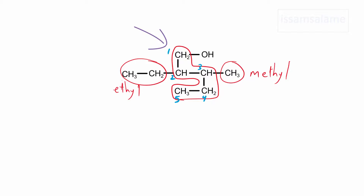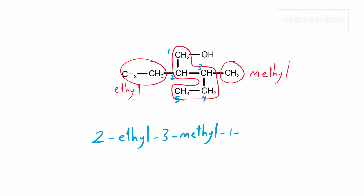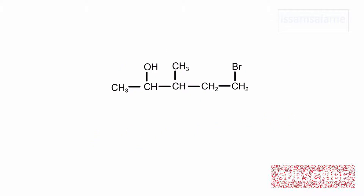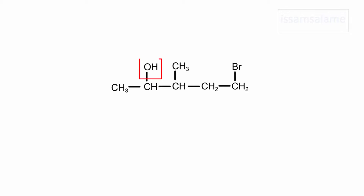The last step is to name the whole compound. Keep in mind that when we have different branches, we name them in alphabetical order. So we start with ethyl, then methyl. The name is going to be 2-ethyl-3-methyl-1-pentanol, which means ethyl at carbon 2, methyl at carbon 3, and hydroxyl group at carbon 1.